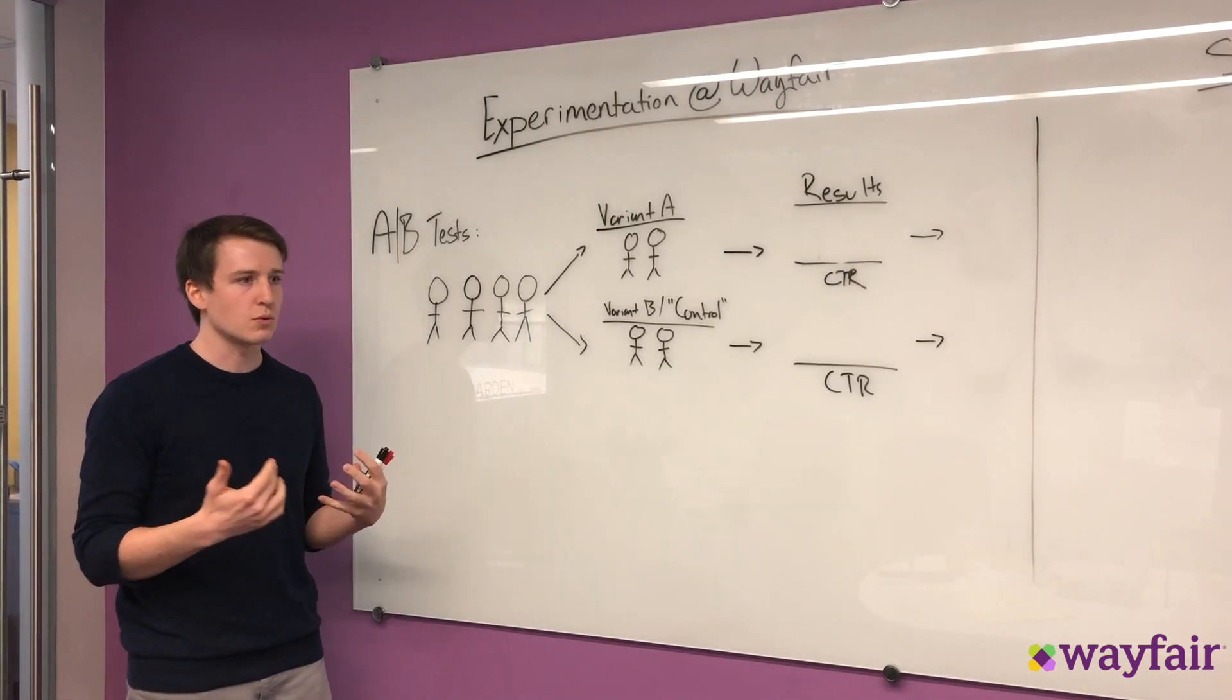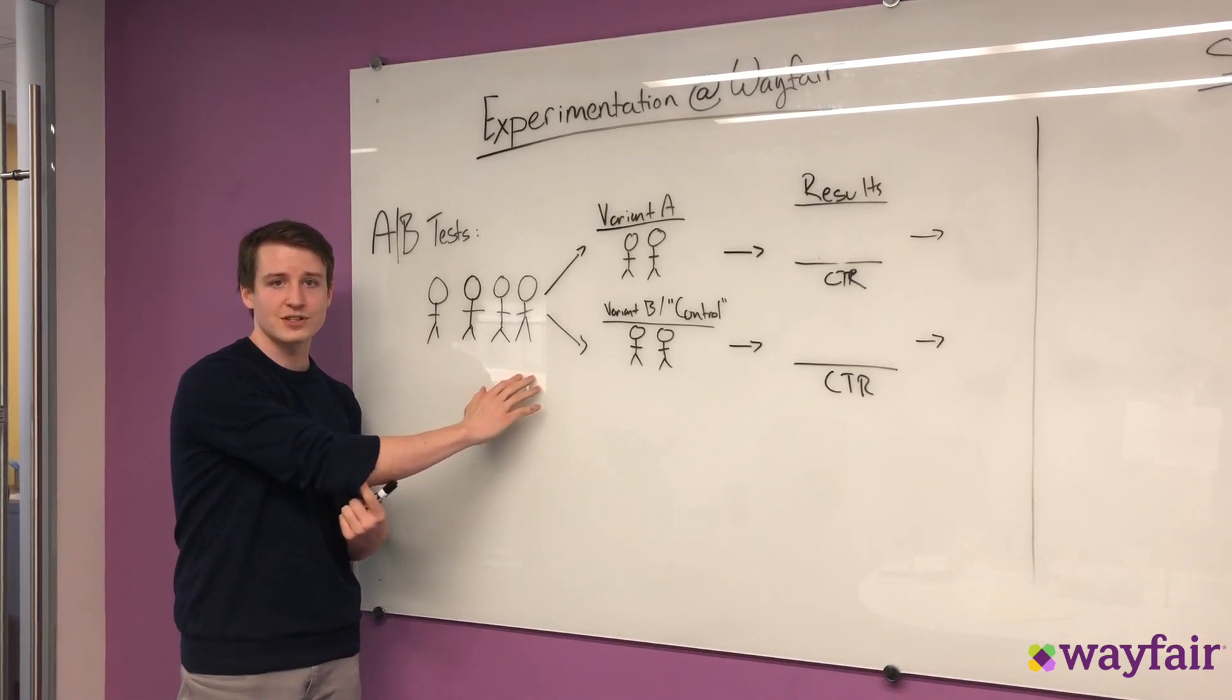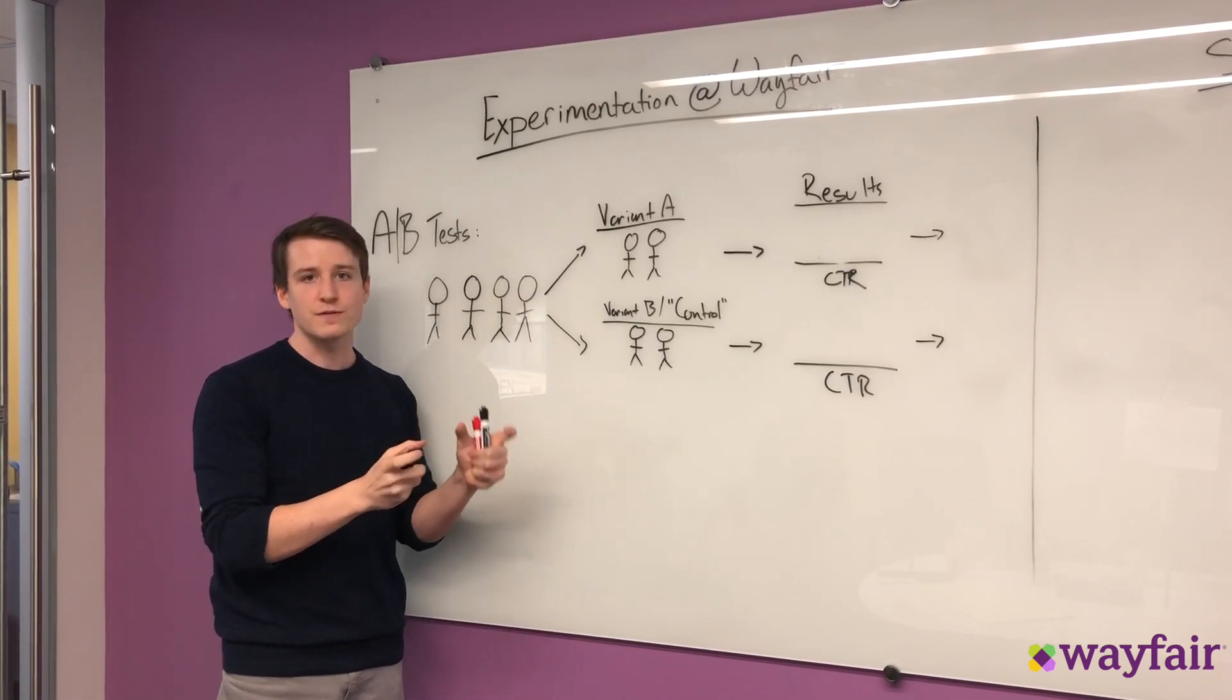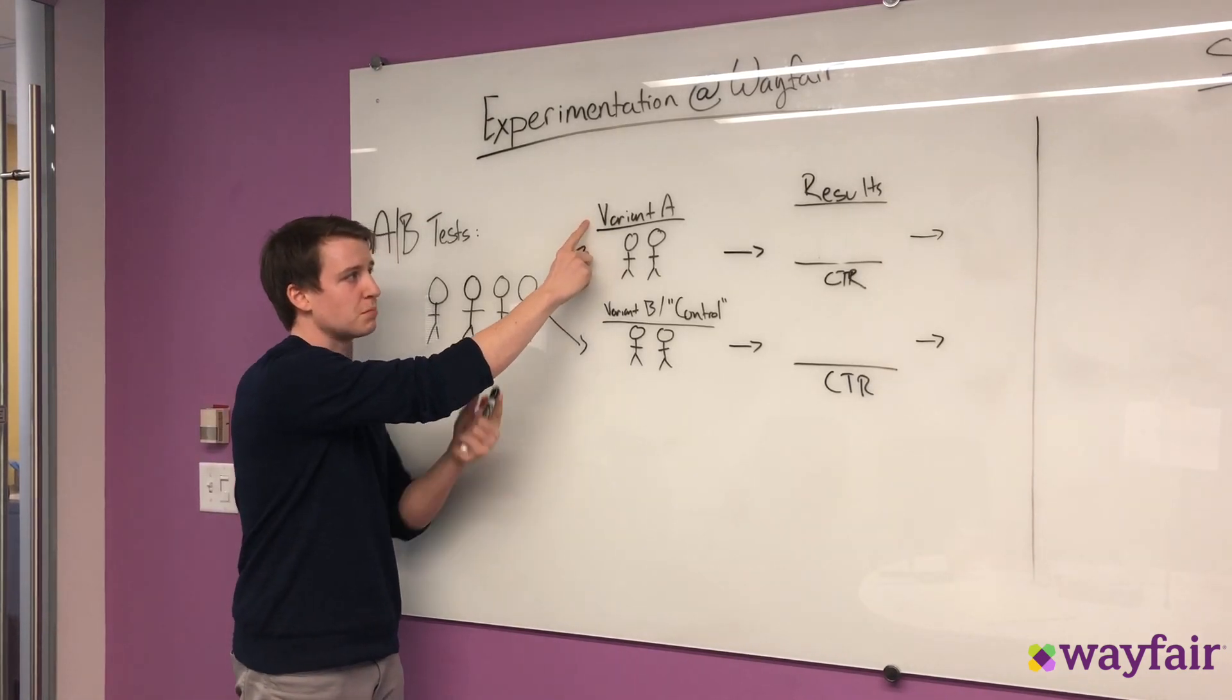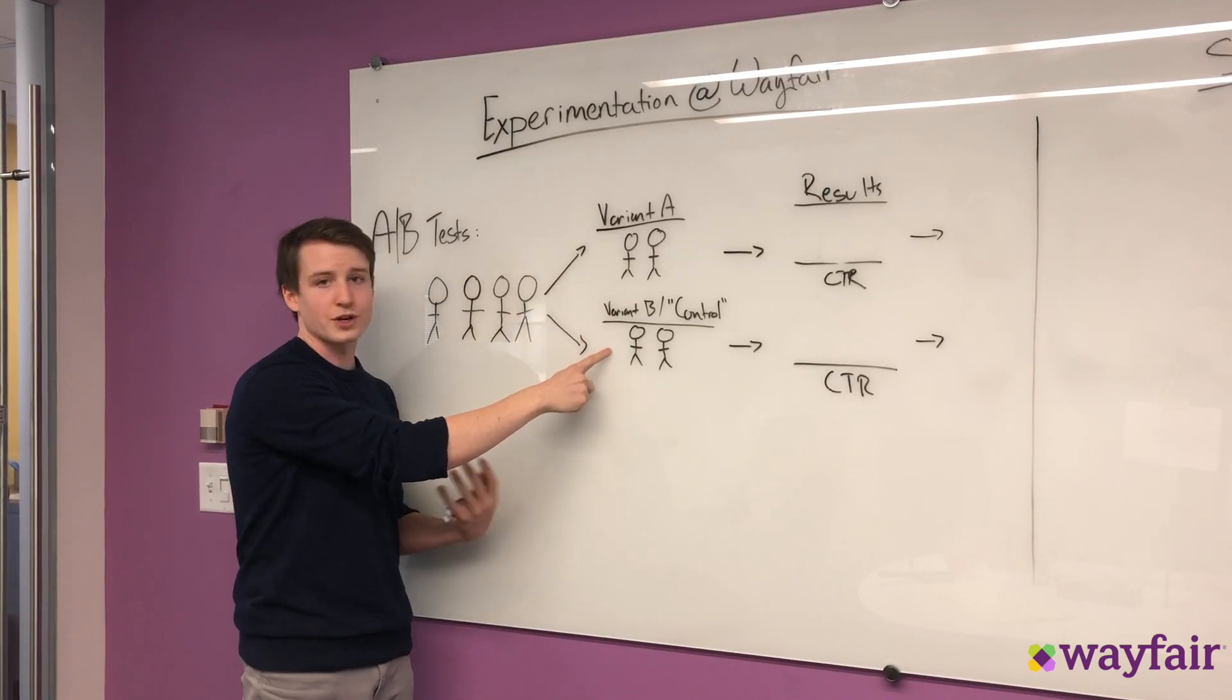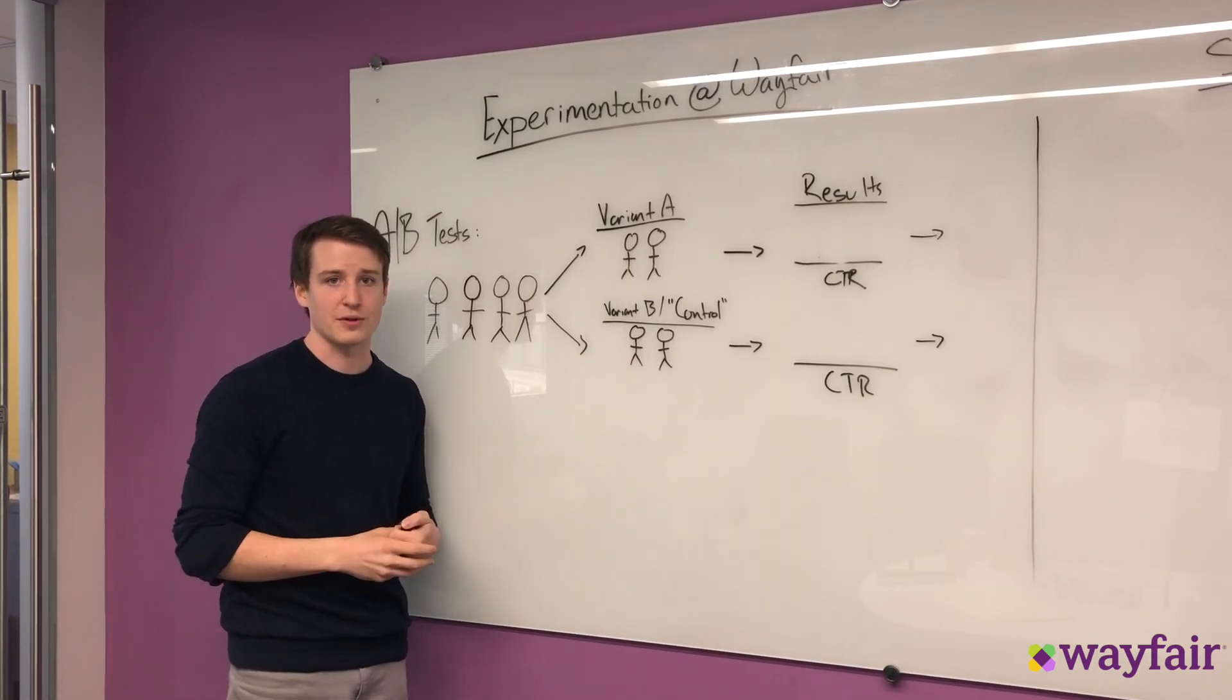So one main way that a lot of people will run experiments are through A/B tests, and it's really simple. You just take your population of customers and split them into two homogeneous groups. The idea is that you show your two different groups two slightly different things. So in your A group, that could be the next possible iteration of one of your models for, let's say, product recommendations. And then in your B group, or your control group, that can be your current model. And so you're testing out whether or not your new model is actually outperforming the model that currently exists.